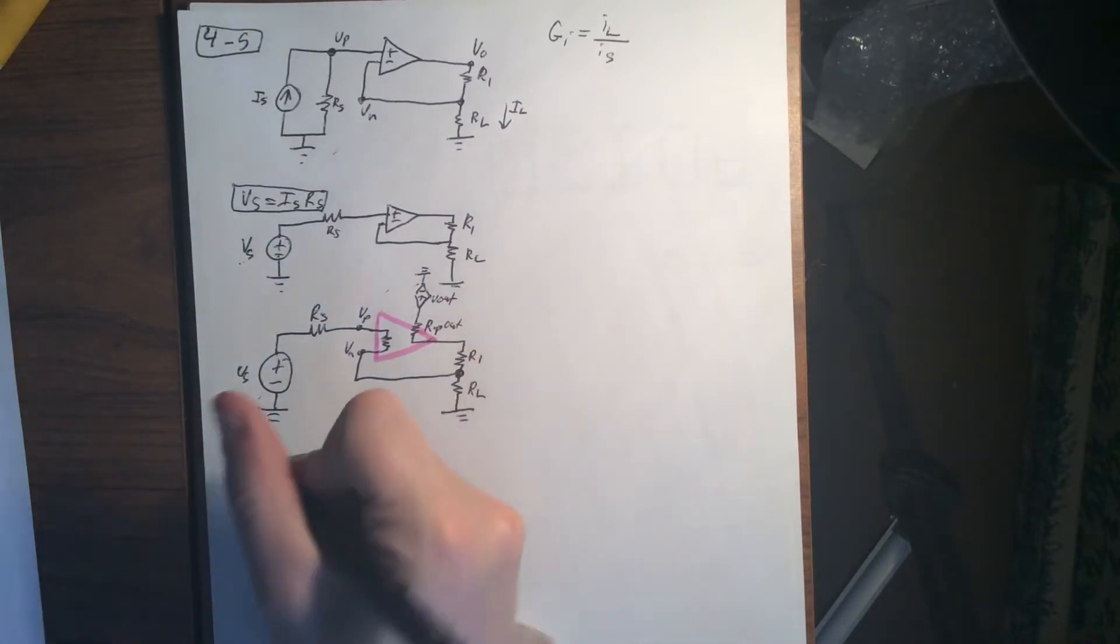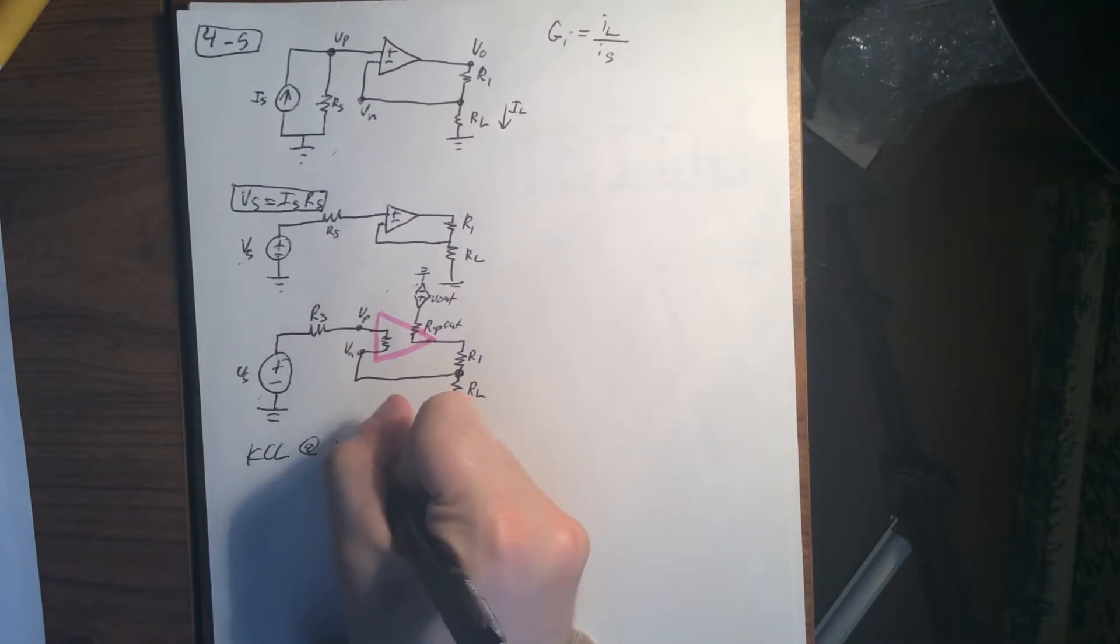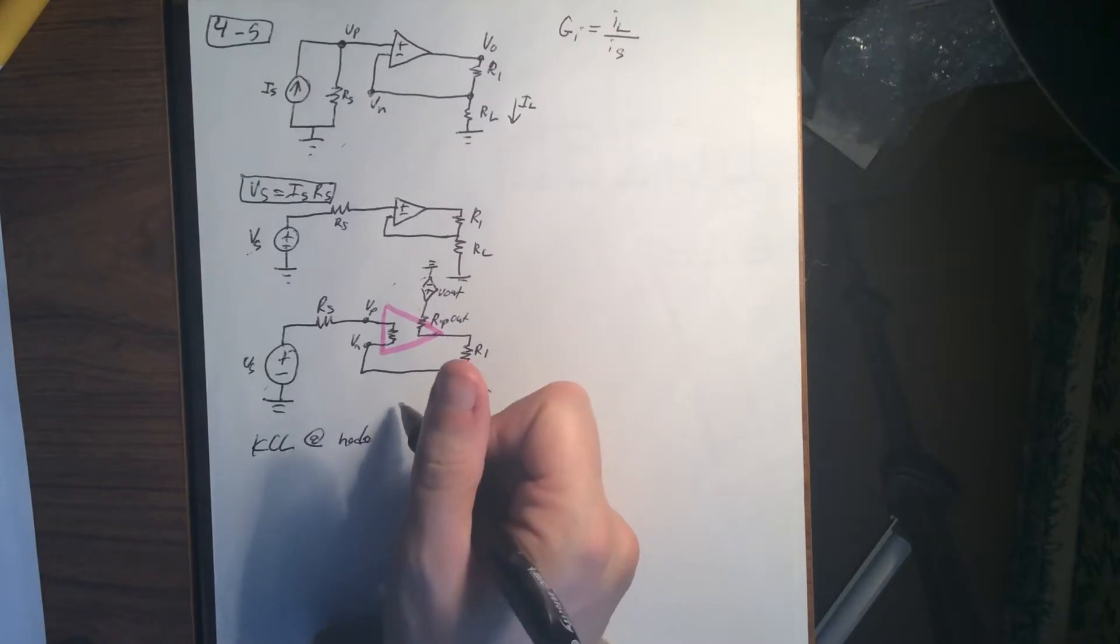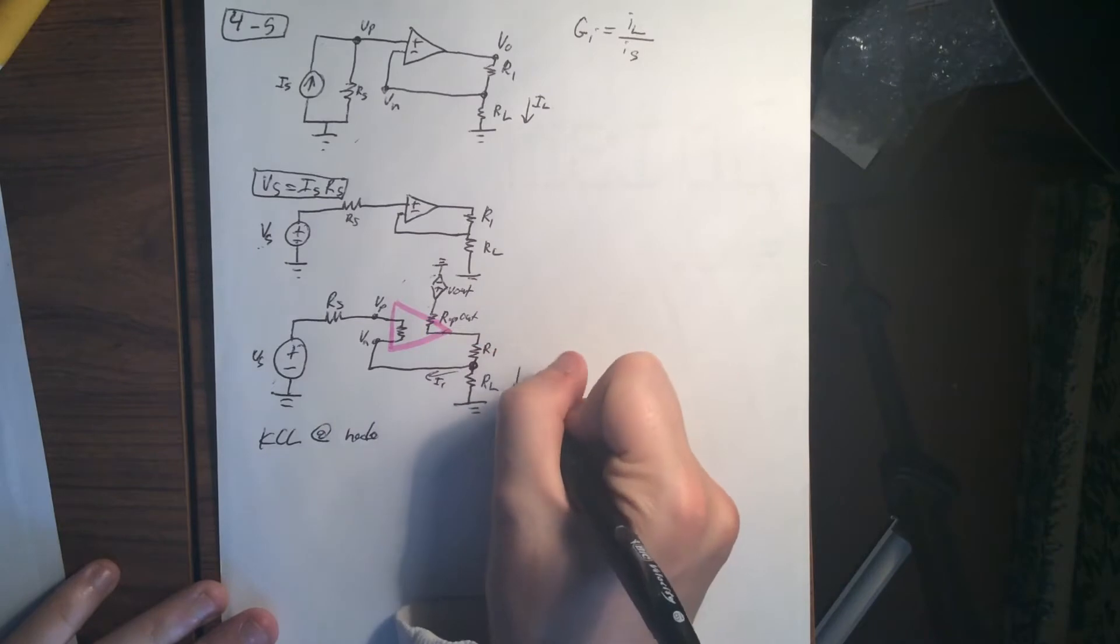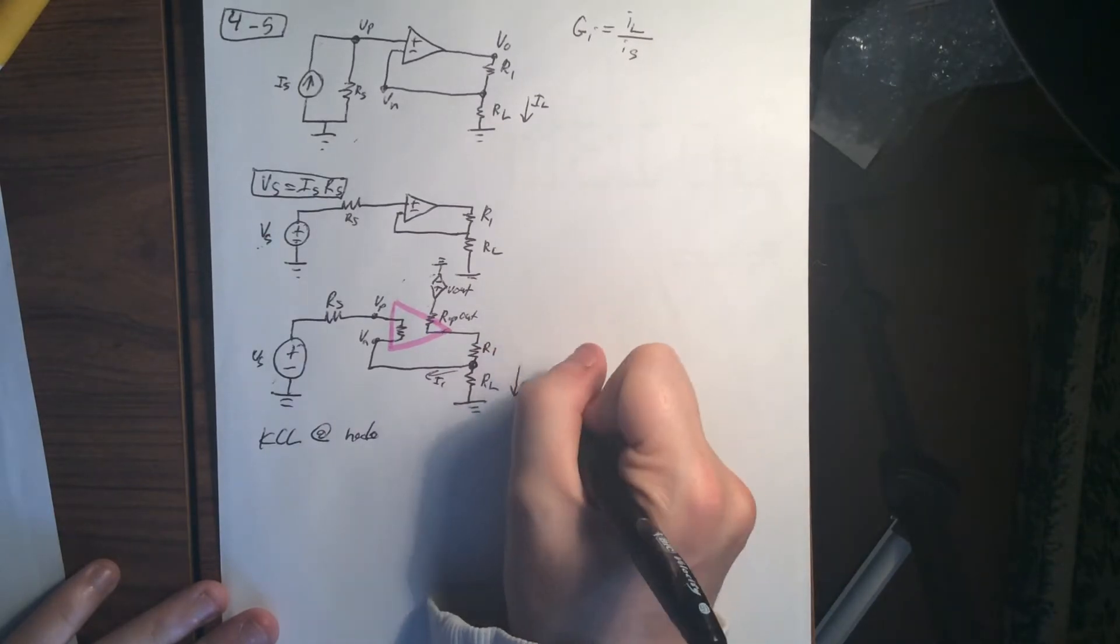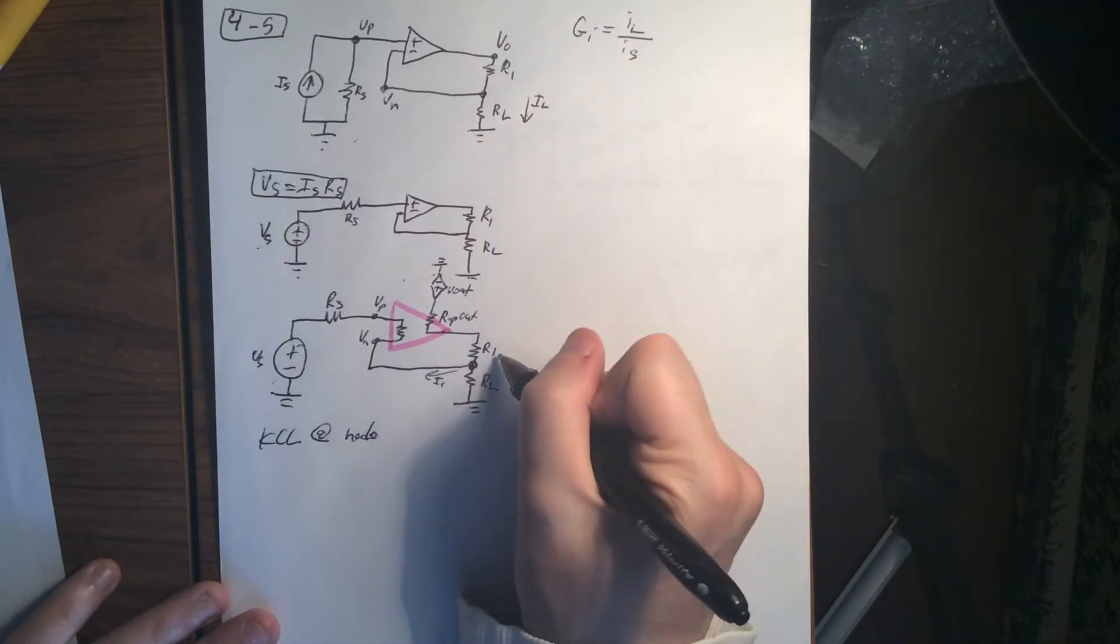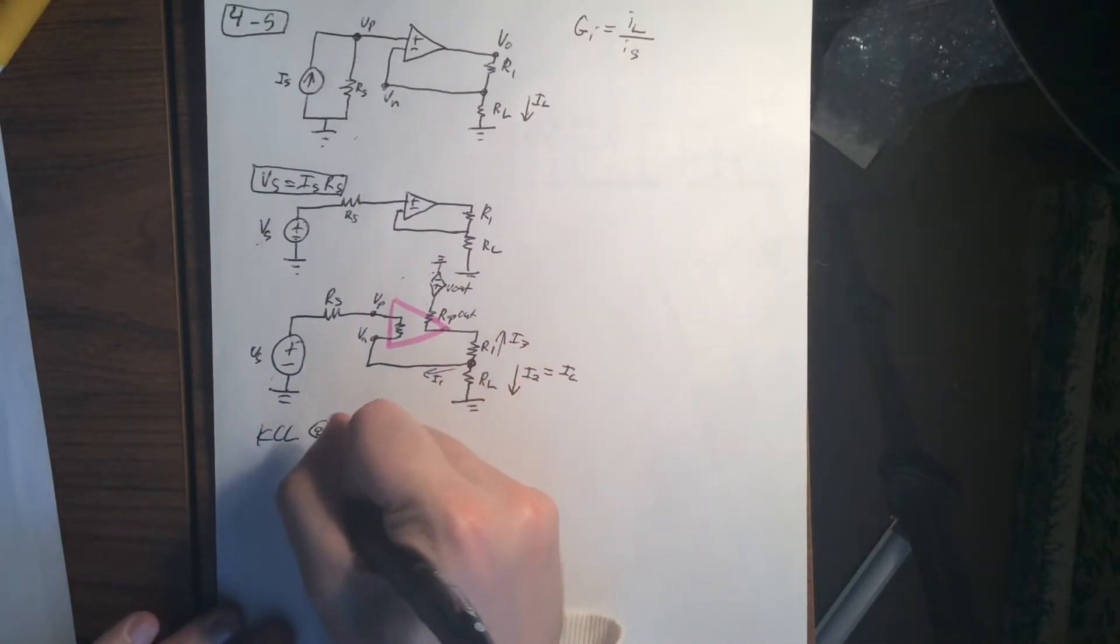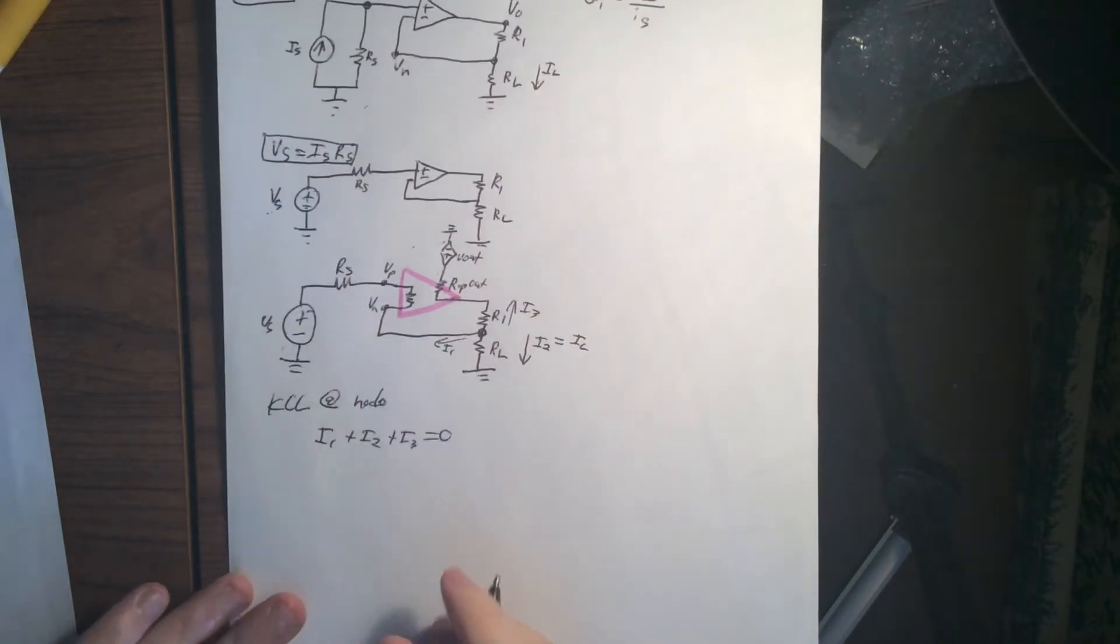So what we're going to do then is we're going to do KCL at node. There's only one node, so it makes it real easy to know which one to do. So our KCL is going to look like what? We're going to have our i1. We're going to have our i2, which is also going to equal, from our beginning, IL. And this one's going to be our i3. So i1 plus i2 plus i3 equals 0.